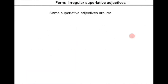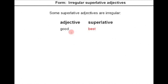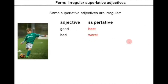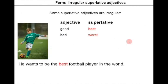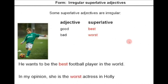Some superlative adjectives are irregular — there are no rules and you have to memorize them. The two most common examples are: good → best, bad → worst. Example: he wants to be the best football player in the world. In my opinion, she is the worst actress in Hollywood.